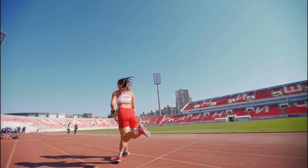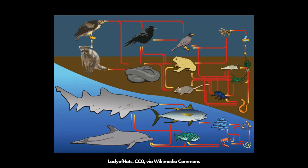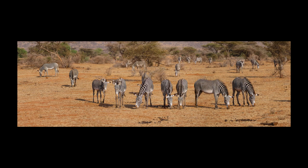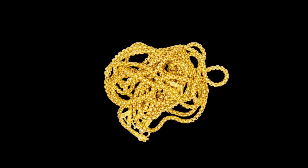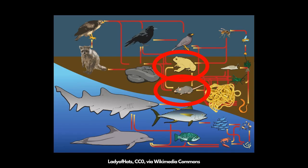But here's the tricky part: energy flow and matter cycling don't happen in a straight line. Instead, it's a complex, interconnected web — a food web. This web shows organisms' multiple dining options and how energy and matter move through the ecosystem. It helps us predict what could happen if we add or remove a species. Think about pulling a knot out of a tangled necklace — that's the impact an extinct species can have on a food web, affecting other species that relied on it for food.